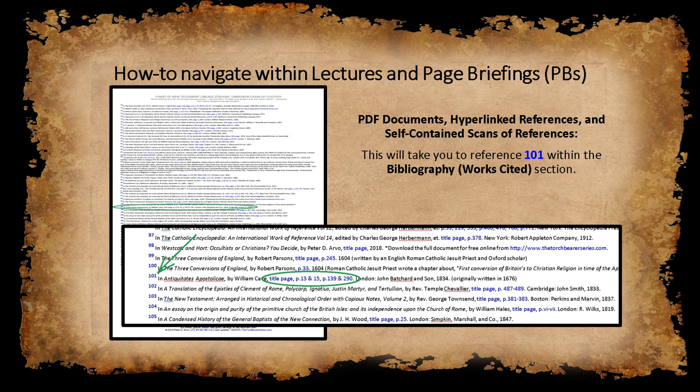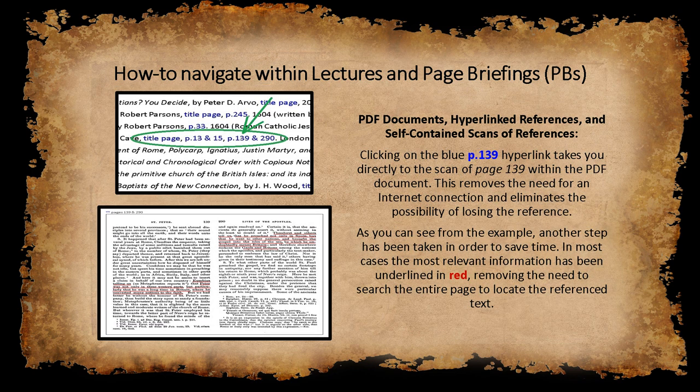But this has been made much easier by incorporating self-contained scans of the expired copyrighted pages available right within the document. In this example, there's a scan of a book title and several separate reference pages shown here circled in green. Clicking on the blue 139 page number hyperlink takes us directly to the scan of page 139 within the PDF document. This removes the need for an internet connection and eliminates the possibility of losing the reference.